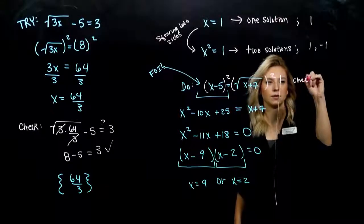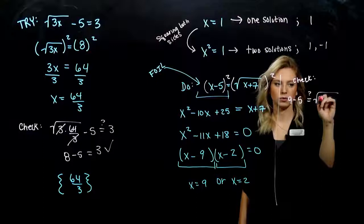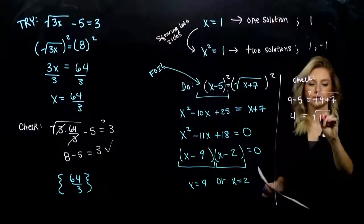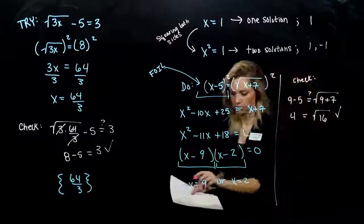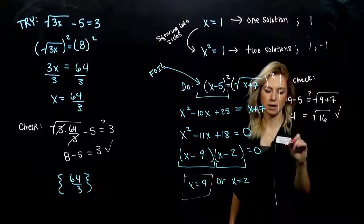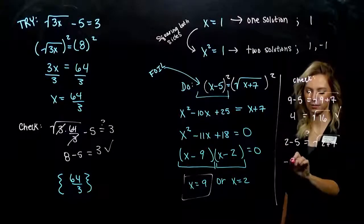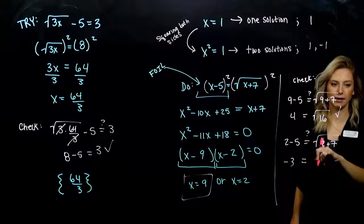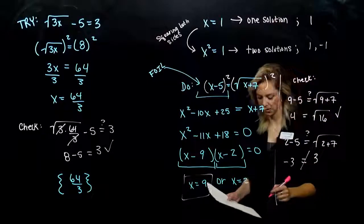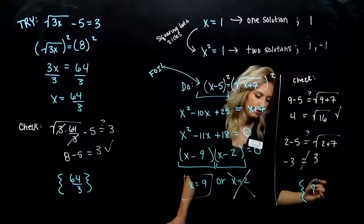We may have introduced problem children when squaring both sides, so we need to check in the original. Checking x equals 9 first: 9 minus 5 equals 4 — is that equal to the square root of 9 plus 7, which is the square root of 16? Yes, that's 4. So 9 works. Now checking x equals 2: 2 minus 5 gives negative 3 on the left, and the square root of 2 plus 7 is the square root of 9, which is positive 3 — we're looking for the principal root. Those aren't equal, so x equals 2 is out. My solution set contains only 9.